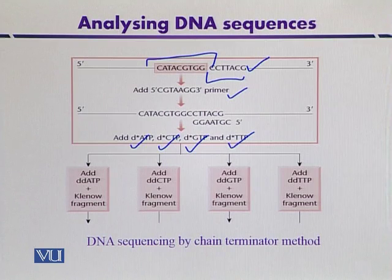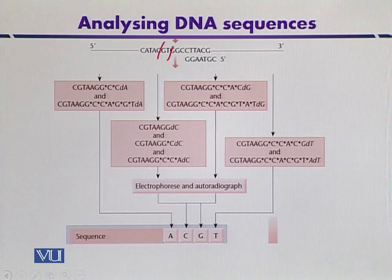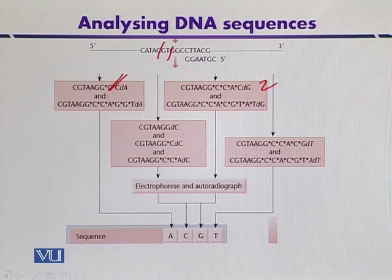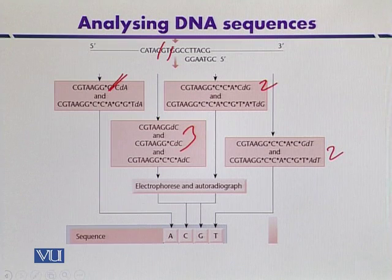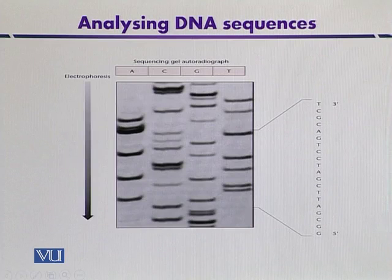This amplification is performed in the presence of the Klenow fragment. We obtain different fragments of the target sequence — for example, if there are two guanine residues, we get two corresponding fragments. In this way, different fragments for different bases are obtained: two for guanine, three for cytosine, and two for thymine. We get a mixture of fragments resolved by gel electrophoresis to reveal the complete sequence of bases. Finally, the polyacrylamide gel autoradiogram shows the sequence of the different base pairs.